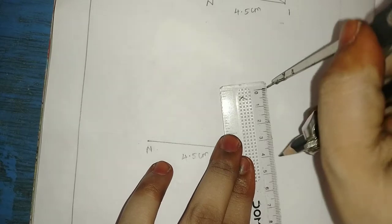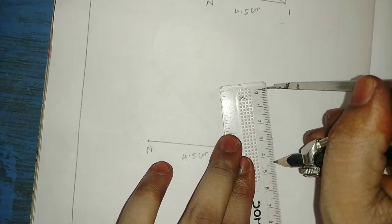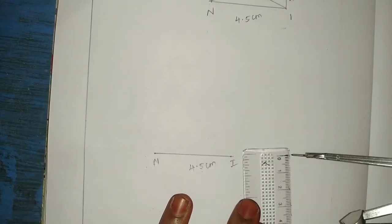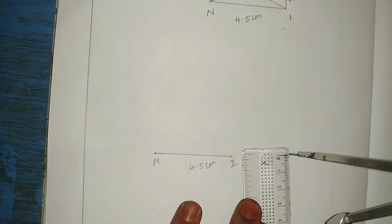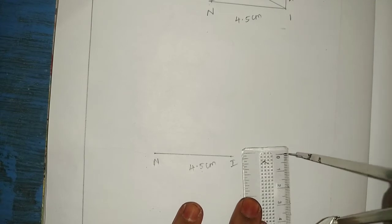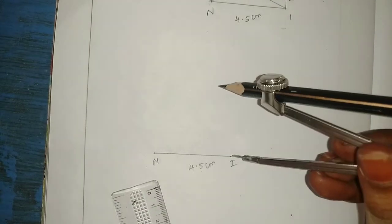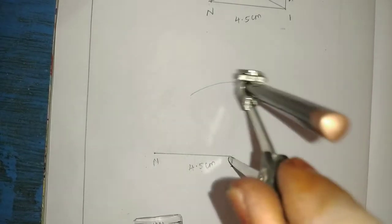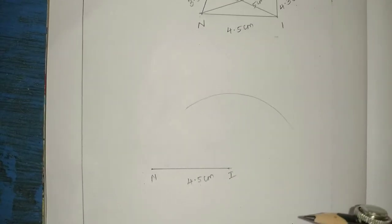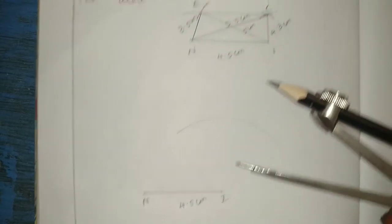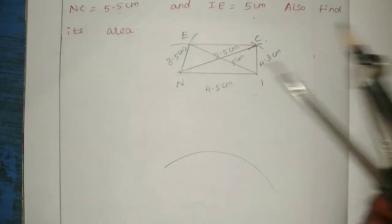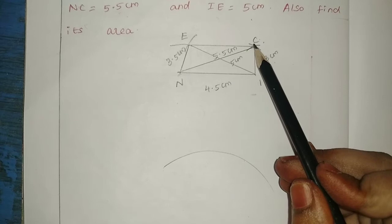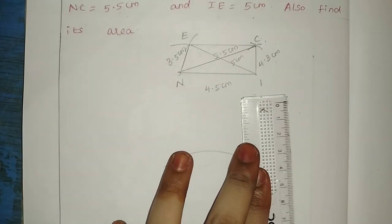How to write IC? Draw IC and put it. Next, put the diagonal. It is easy to join. The diagonal part is N to C, diagonal NC equal to 5.5. So that is why IC is put. 5.5 — measure one arc.